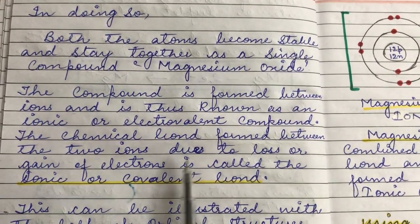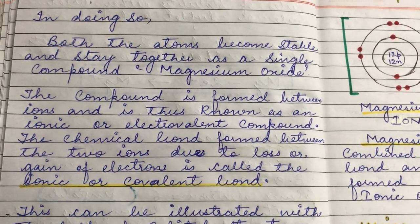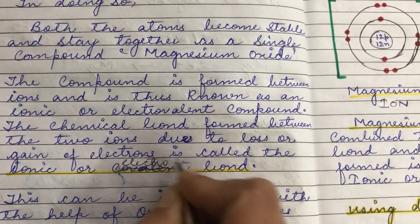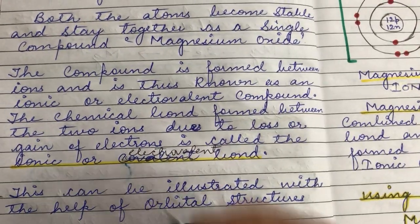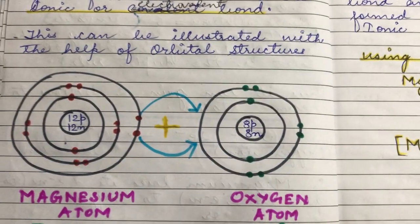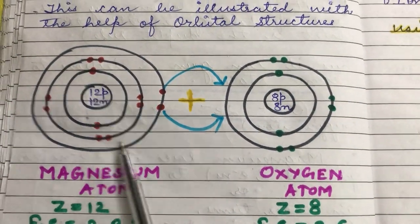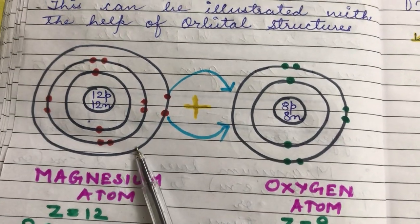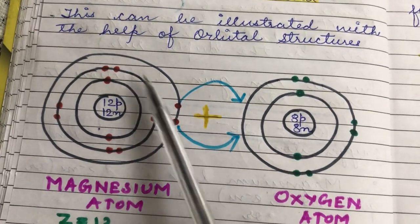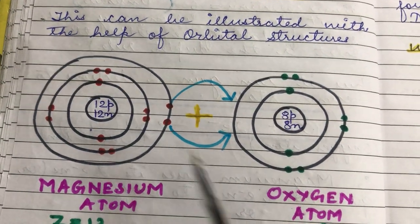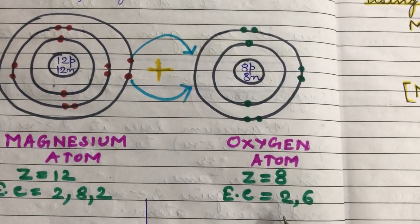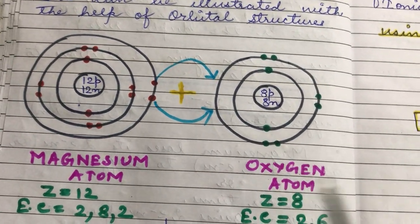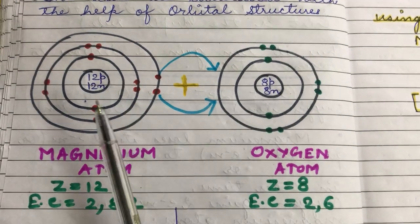The chemical bond formed between two ions due to the loss or gain of electrons is called the ionic or electrovalent bond — not the covalent bond. This can be illustrated with the help of orbital structures. Magnesium atom has atomic number 12 and electronic configuration 2, 8, 2. Oxygen atom has atomic number 8 and electronic configuration 2, 6. We can clearly see that both atoms are unstable.